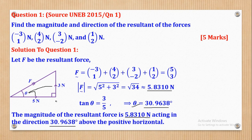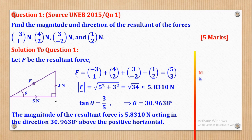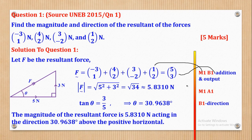Now let's see how marks can be awarded. M1 is for adding the vectors and B1 is for getting the resultant. Then M1 is for substituting into Pythagoras' theorem and A1 is for getting the magnitude output. B1 is for getting the direction. That's how the 5 marks would come about.